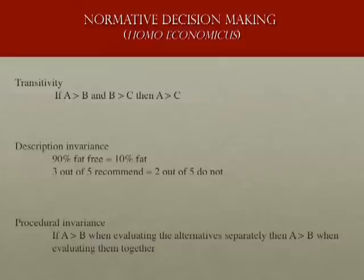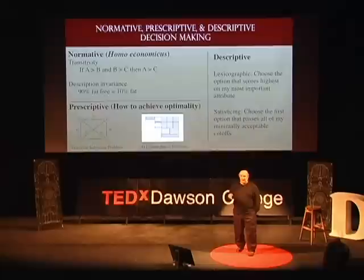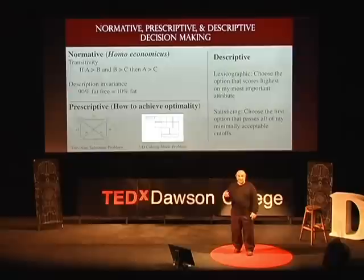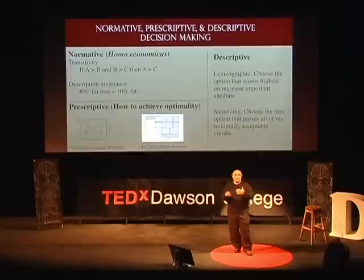A normative approach is what classical economists typically do — that's why it's called homo economicus. Classical economists argue that for us to make good decisions, we have to behave rationally, and they have a very particular way of defining rationality. For example, the transitivity rule says that if I prefer car A to car B, and car B to car C, then I should prefer car A to car C. Or if you tell me a hamburger is 90% fat-free versus 10% fat — those two frames are equivalent, yet people end up with completely different evaluations. That would be irrational.